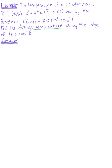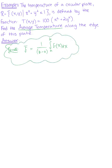To compute the average value of F, we simply divide the ordinary integral by the length of the interval. So to find the average temperature with the line integral, we simply divide by the length of the boundary. The average temperature is 1 over L multiplied by the line integral over C of F ds, where L is equal to the length of the curve.